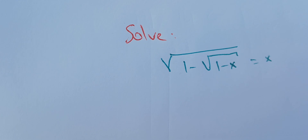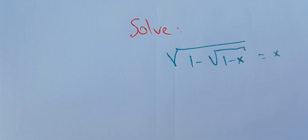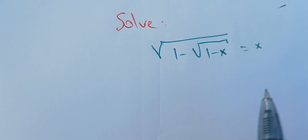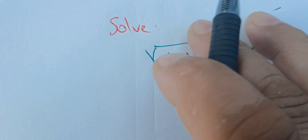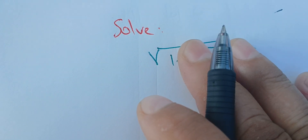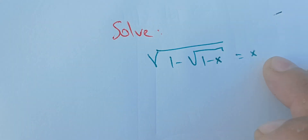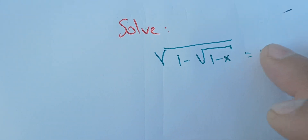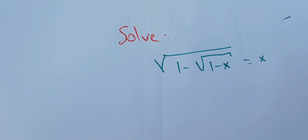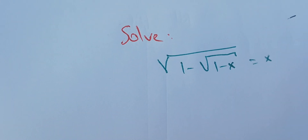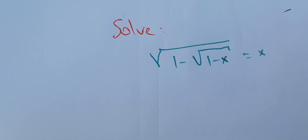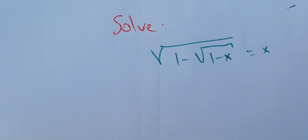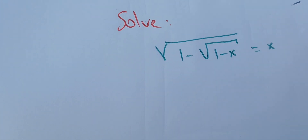But first, we need to determine the domain of definition. We're going to impose the conditions on the left part, and once we find them, we're going to impose them on X, because we know that X is defined for any value in ℝ. That means the domain of X is the set of all real numbers.